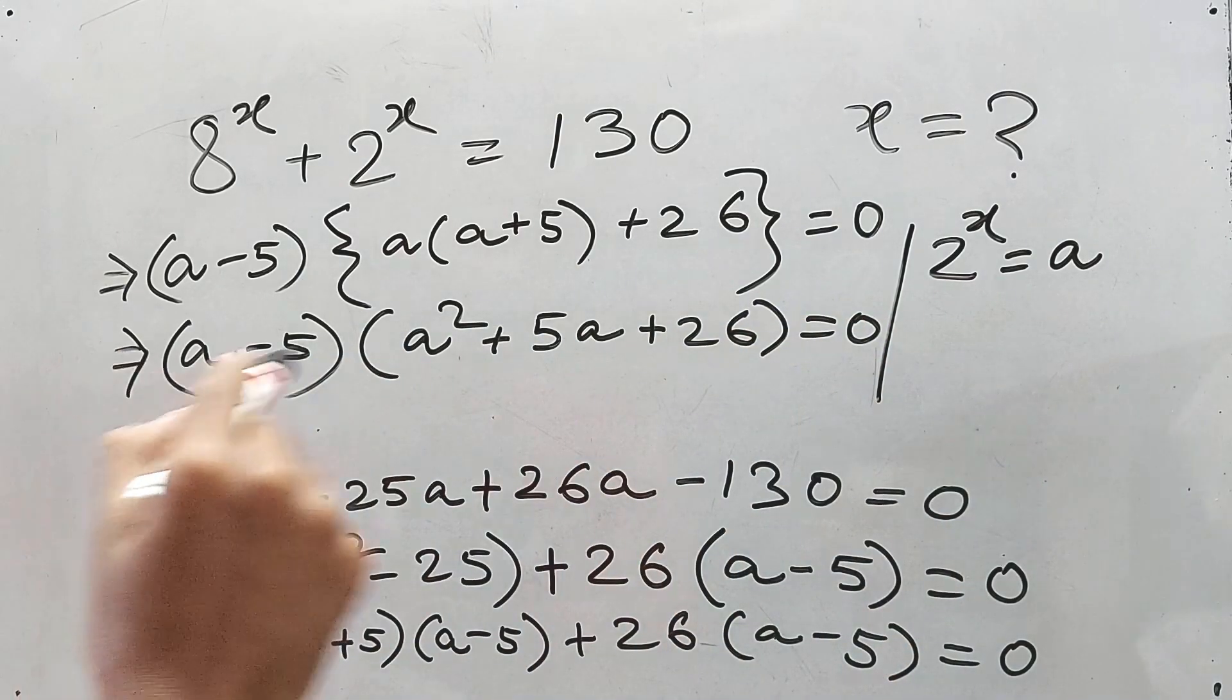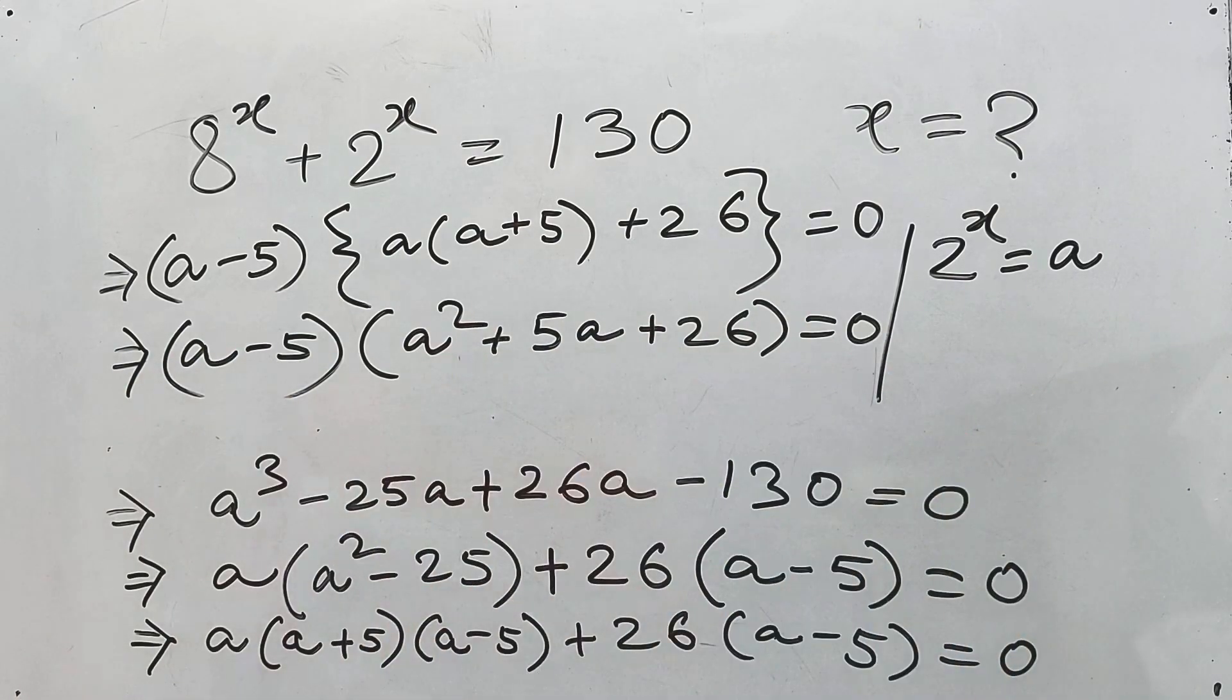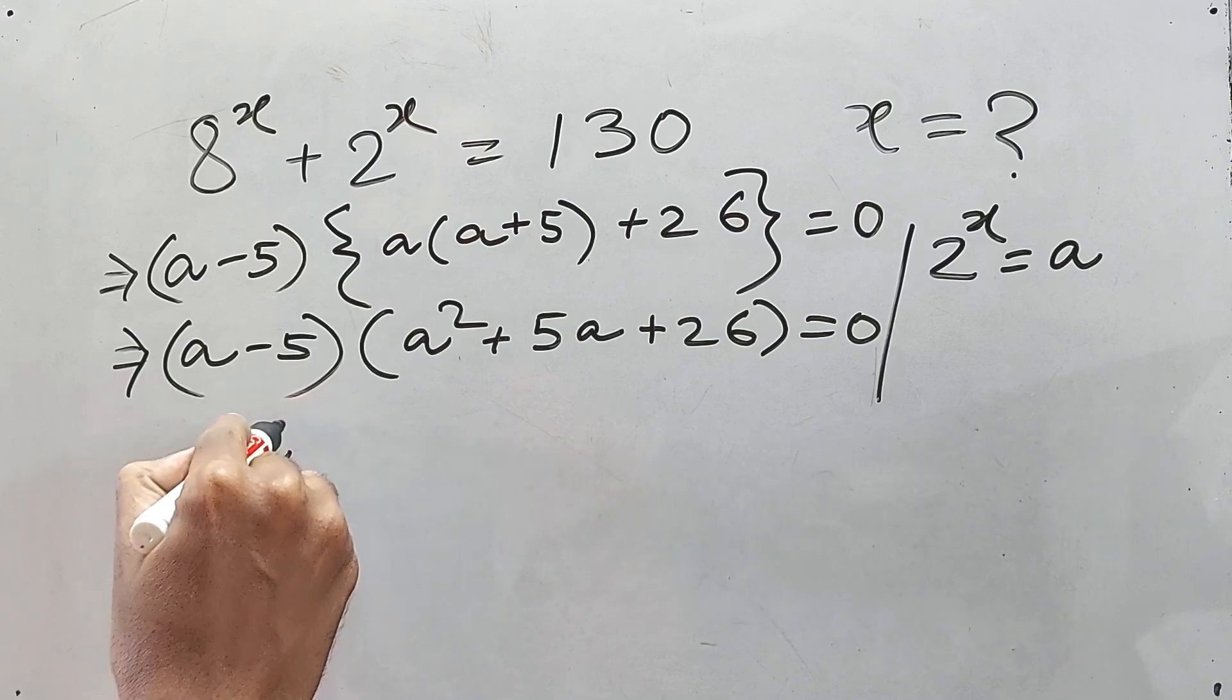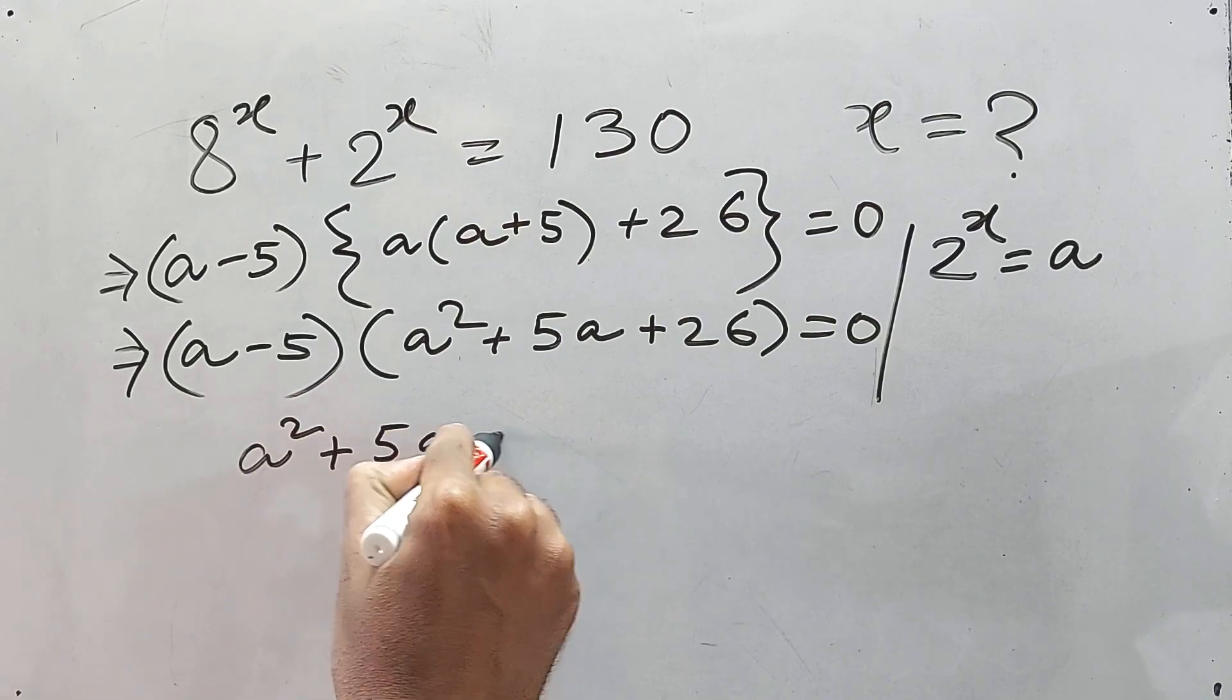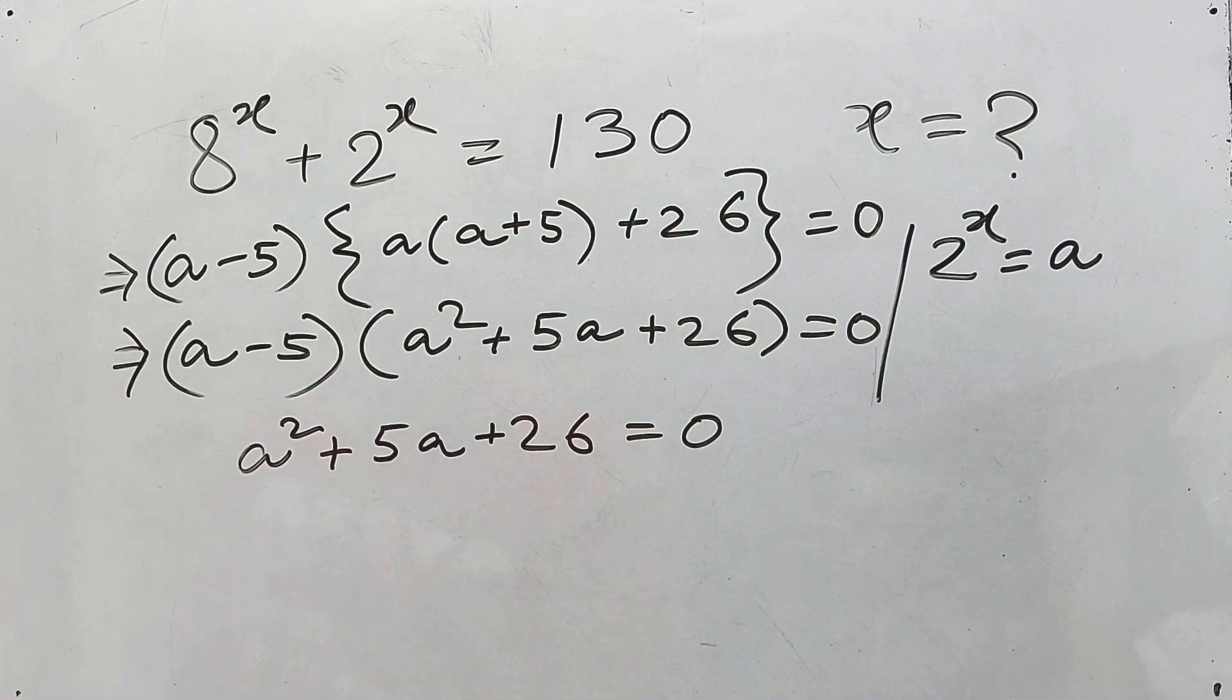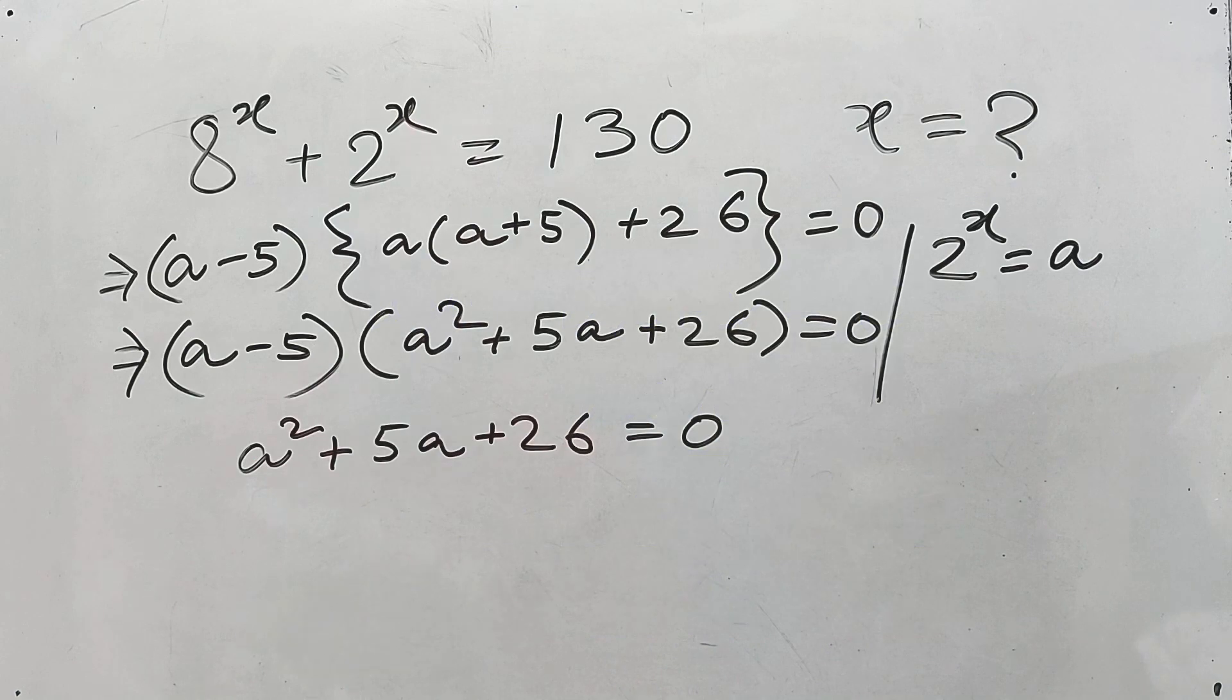Multiplication of two terms is equal to 0 means either this one is equal to 0 or this one is equal to 0, right? We know this. So let's try the toughest part first, that is if a square plus 5a plus 26 is equal to 0, then again we know this formula, right? So as per this formula, let's just find the value of a.